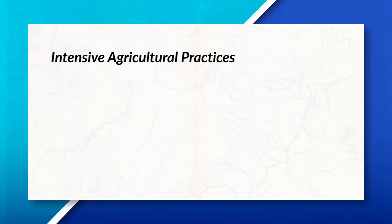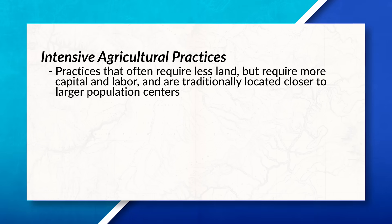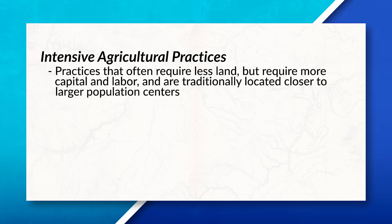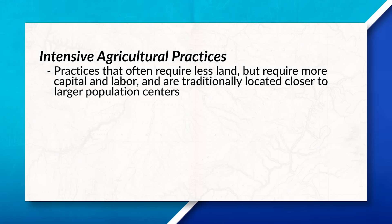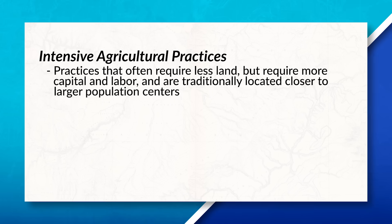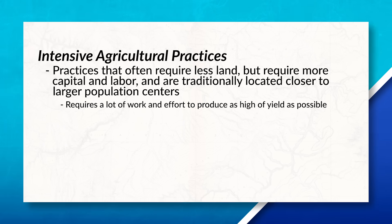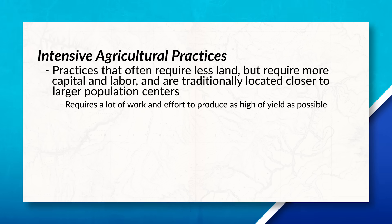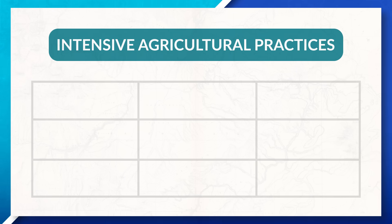Intensive agricultural practices often require less land, but require more capital and labor. They're traditionally located closer to larger population centers. This type of agricultural production requires a lot of work and effort to produce as high of a yield as possible. Today, we can see a variety of intensive agricultural practices around the world.